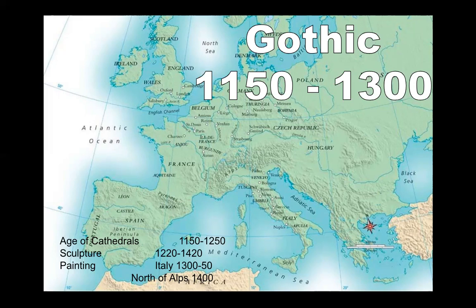We normally think about Gothic as being an architectural style, but there are other types of art that come out from this time period as well. Sculpture really develops around 1220, and painting happens in different places — in Italy around 1300, and north of the Alps around the 1400s. The style we study today happens a little bit later; there's a concentration of money in the building of large churches.